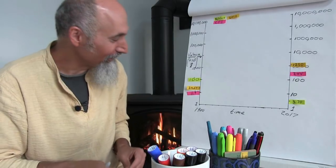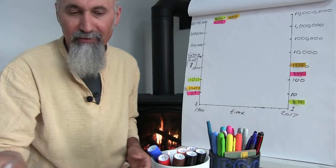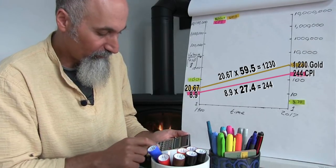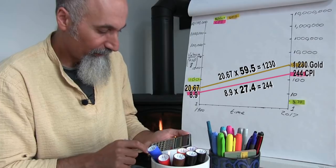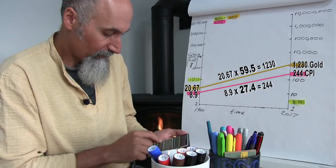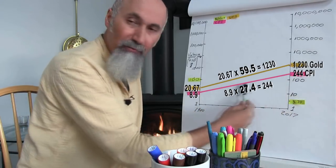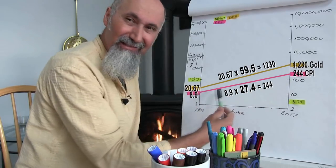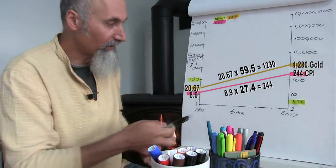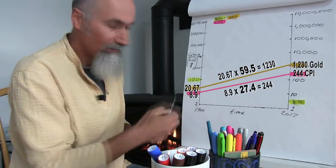Gold has gone from $20 to $1,200. You can calculate the multiple: for the CPI, 244 divided by 8.9 is 27.4 times, and 1,230 divided by 20 is 59 times. Even though it doesn't appear so on a log scale, gold has increased twice as fast as the CPI.